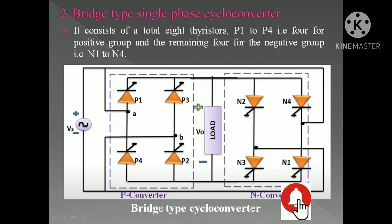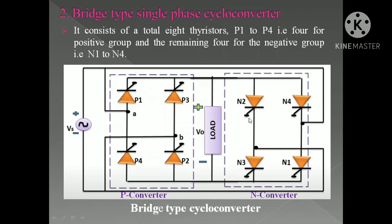The positively connected thyristors are called the P converter and the reversely connected thyristor bridge is called the N converter. The P converter thyristors are triggered so that the load keeps getting positive voltage, and the N converter thyristors are triggered so that you always get a negative voltage envelope at the load. It all depends on how you trigger the P converter bridge and N converter bridge.